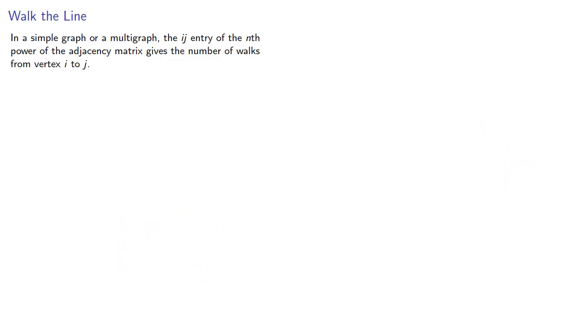In a simple graph or a multigraph, the ij entry of the nth power of the adjacency matrix gives the number of walks from vertex i to j.